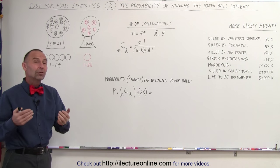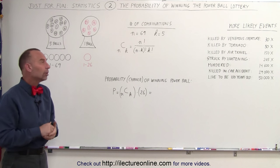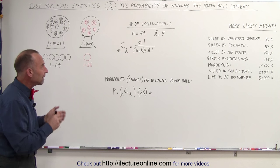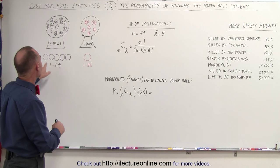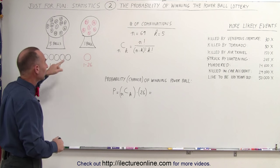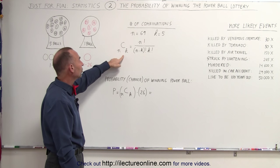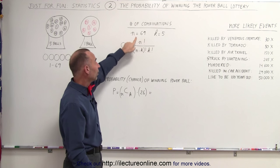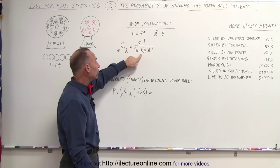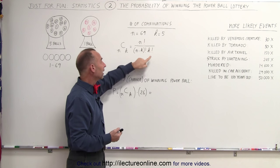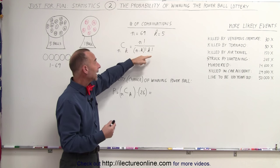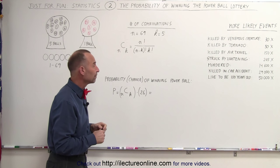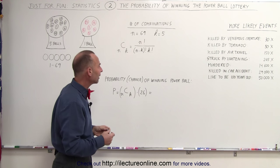To figure out the probability of winning the grand prize, we need to find out the number of combinations you can have on these five balls. The equation for the number of combinations is equal to n factorial, n being the total number of balls, divided by (n minus k) factorial times k factorial. Again, k is the number of balls you draw out of the machine. So let's calculate that and see what we get.